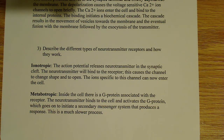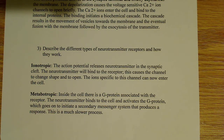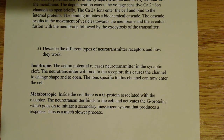There's what's known as an ionotropic receptor. What happens here is the action potential releases neurotransmitter in the synaptic cleft — that's the space in between the presynaptic and postsynaptic terminals. The neurotransmitter binds to the receptor, and this causes the channel to change shape and to open. The ions specific for that channel can now enter the cell.